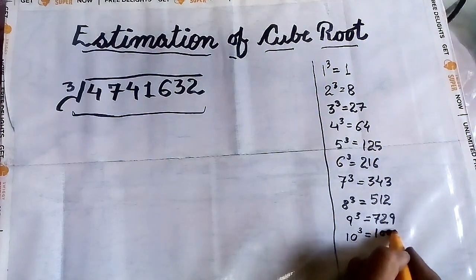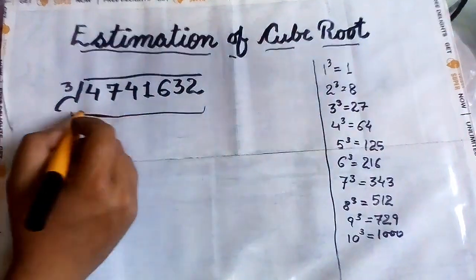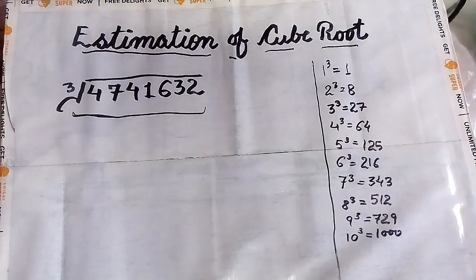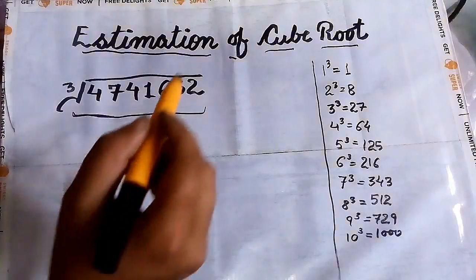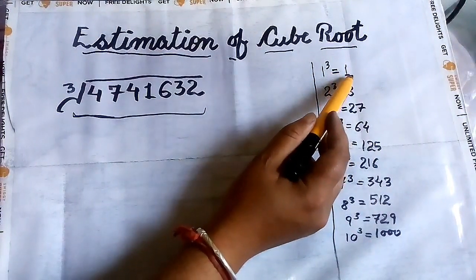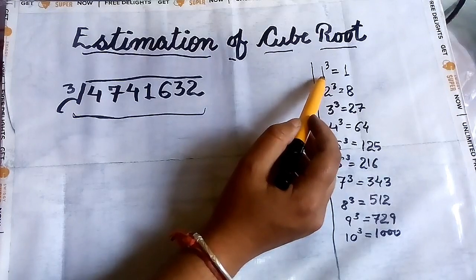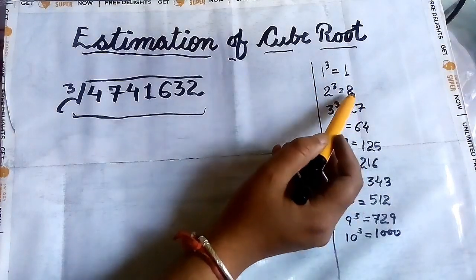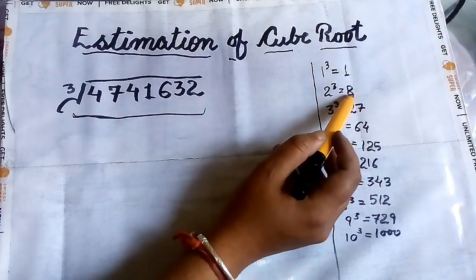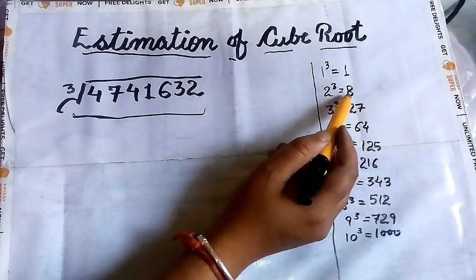Remember, this method is applicable for perfect cube numbers only. Now let us discuss the method. You must know that if the ones digit of a number is 1, then the ones digit of its cube root will be 1 itself. If 2³ = 8, so if the number is ending with 8, the ones digit in its cube root will be 2.